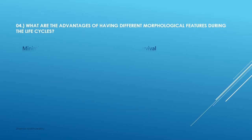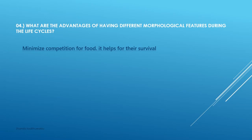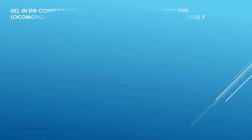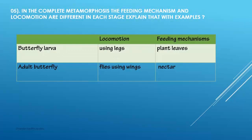What are the advantages of having different morphological features during the life cycle? The main advantage is to minimize competition for food, which aids in their survival. In complete metamorphosis, the feeding mechanisms and locomotions are different in each stage.